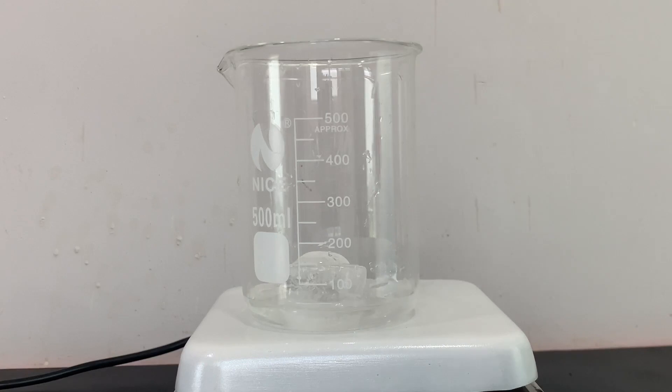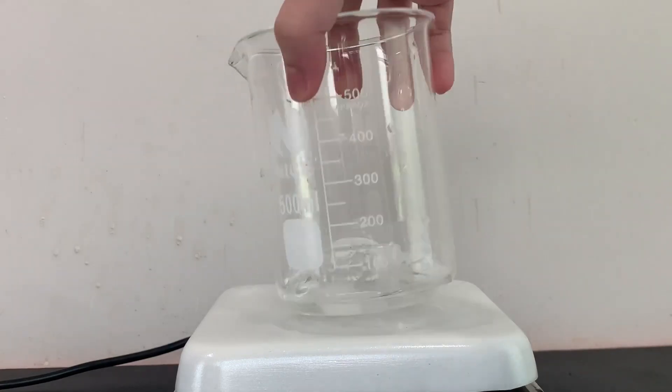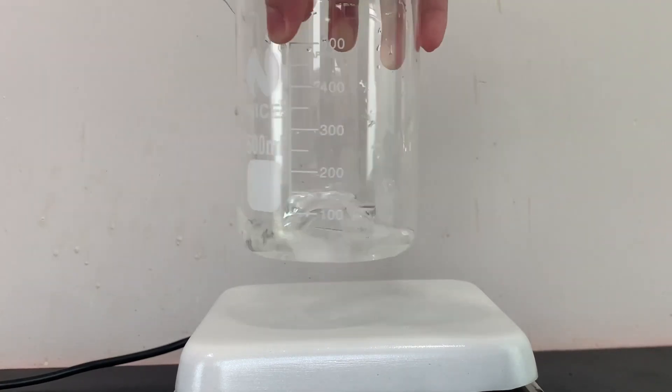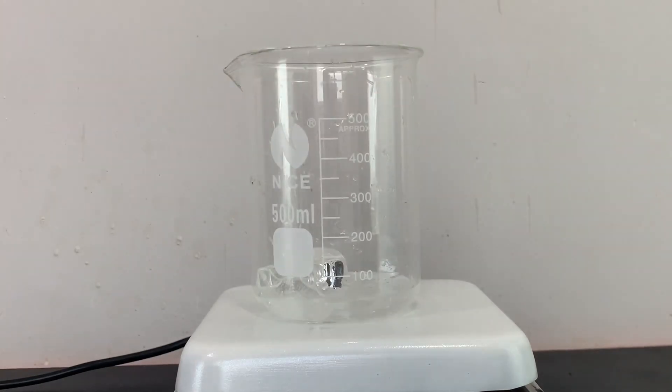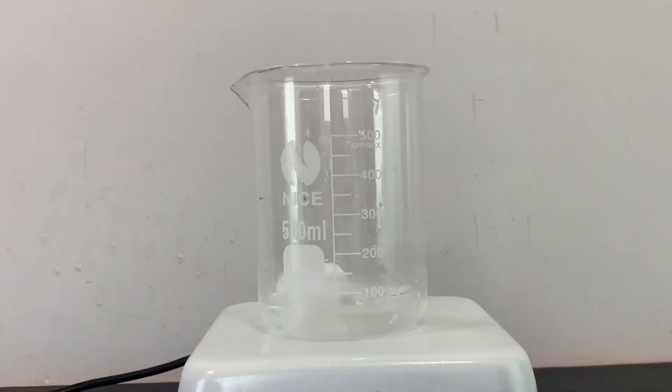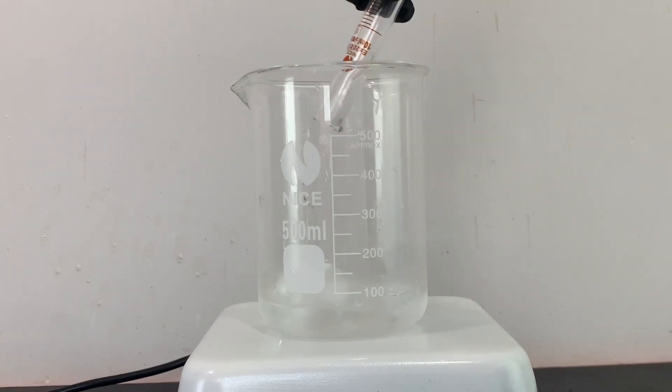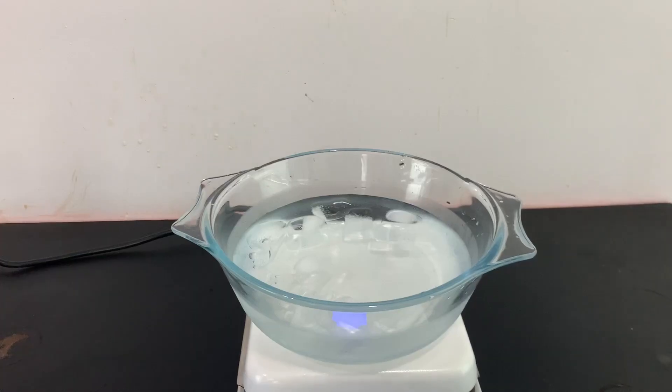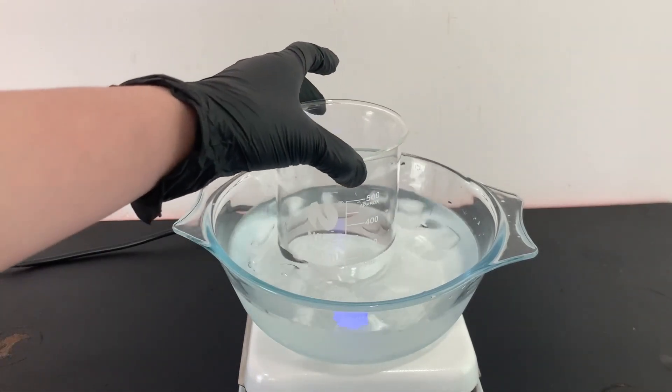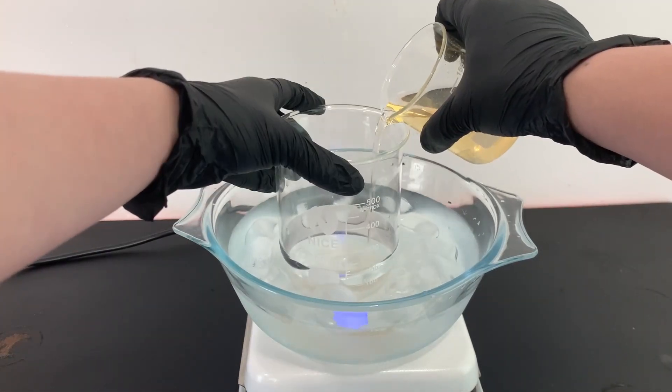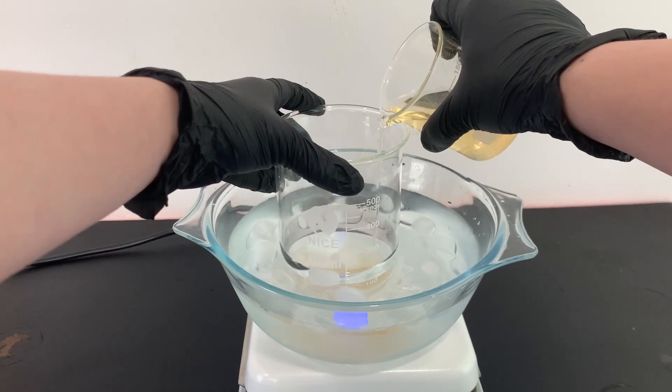To the 500 milliliter beaker, I added two ice cubes and poured in 25 milliliters of water. To the ice water mixture, I added 5 milliliters of concentrated hydrochloric acid. I cooled the 500 milliliter beaker on an ice bath and then poured in the contents of the 100 milliliter beaker.